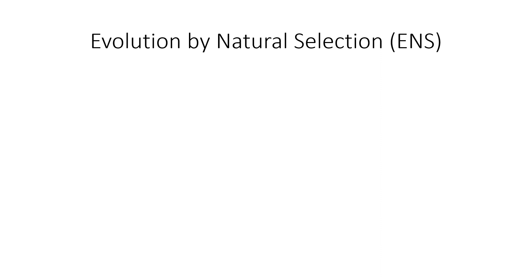So what is evolution by natural selection that Darwin came up with? There are three components — there will be an exam question on this. The first is that variability exists: different members of a species have different traits. In humans, some people are taller, some shorter, some have different colored hair, different colored eyes — there is a ton of variability. So variance exists.